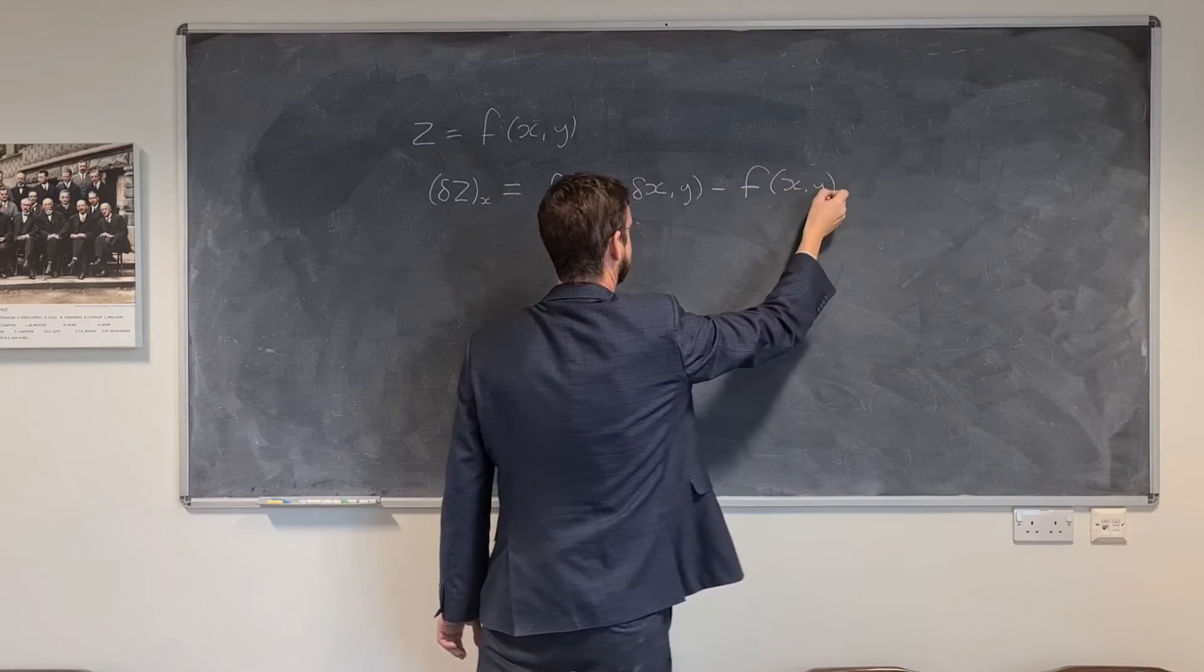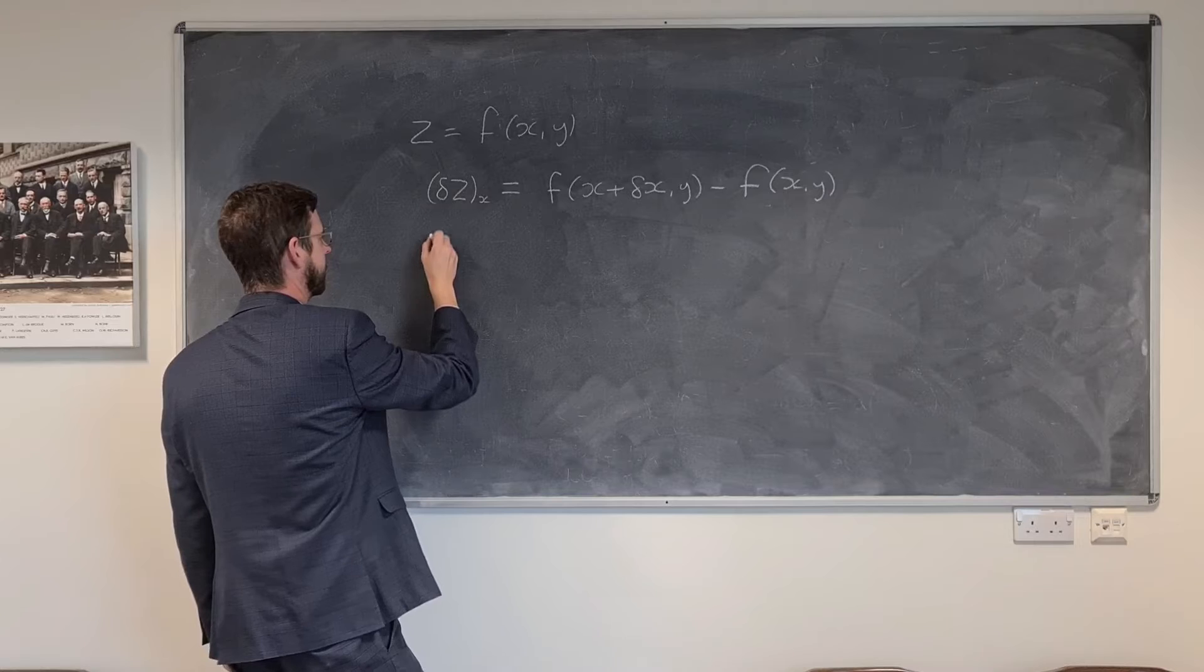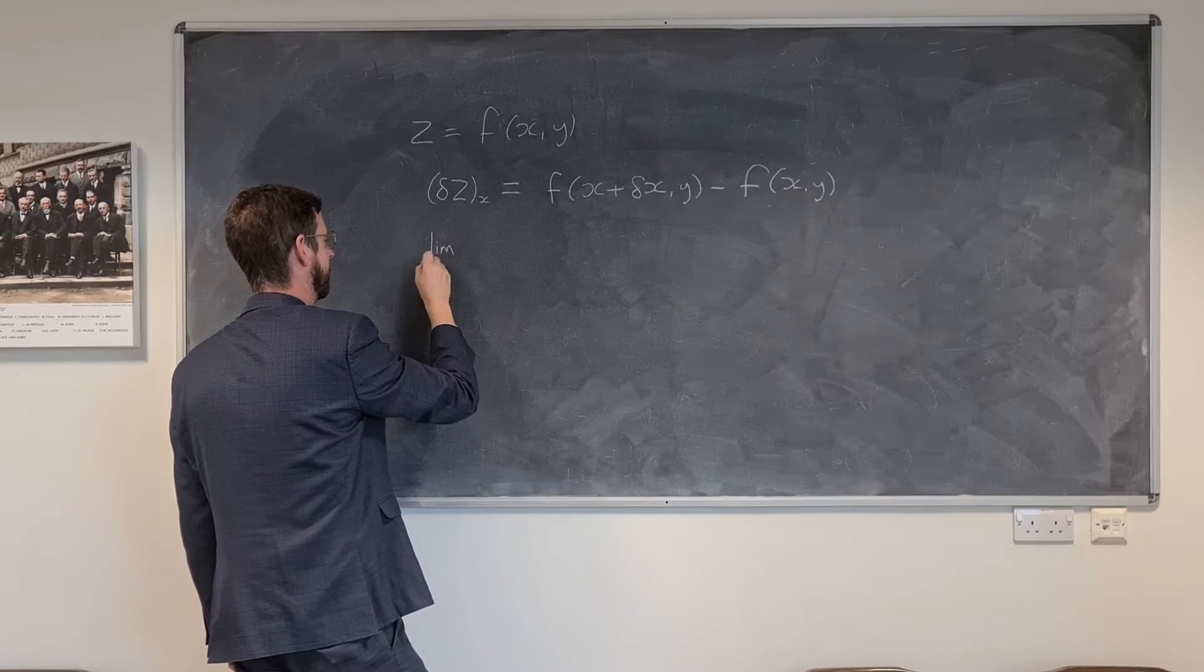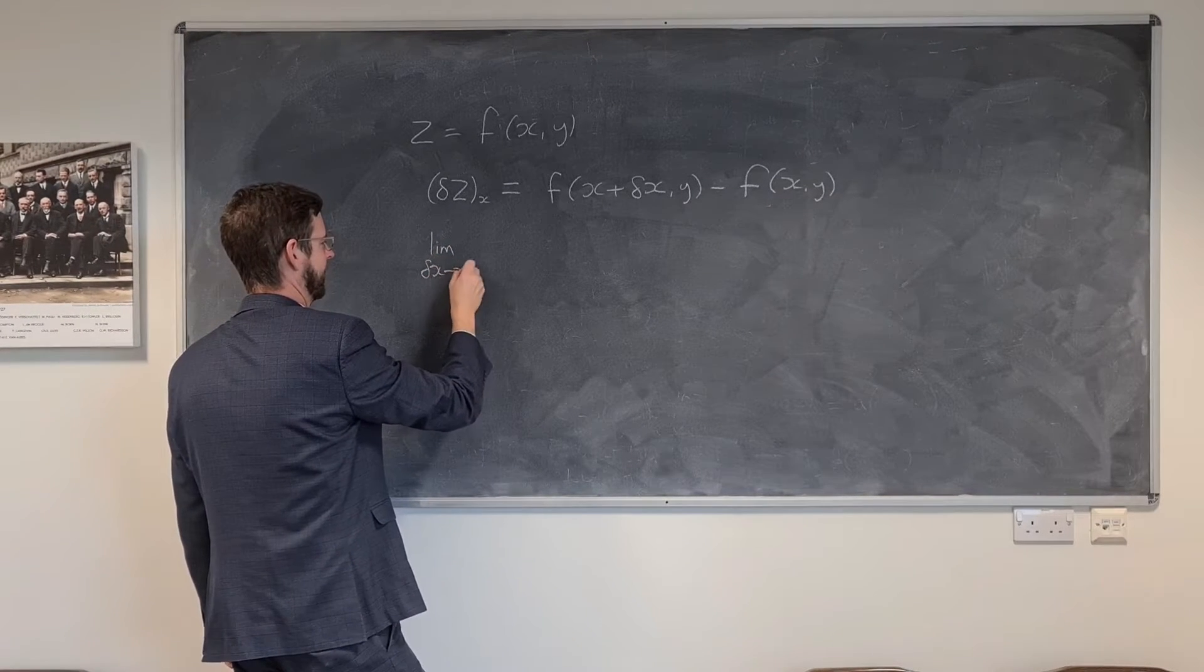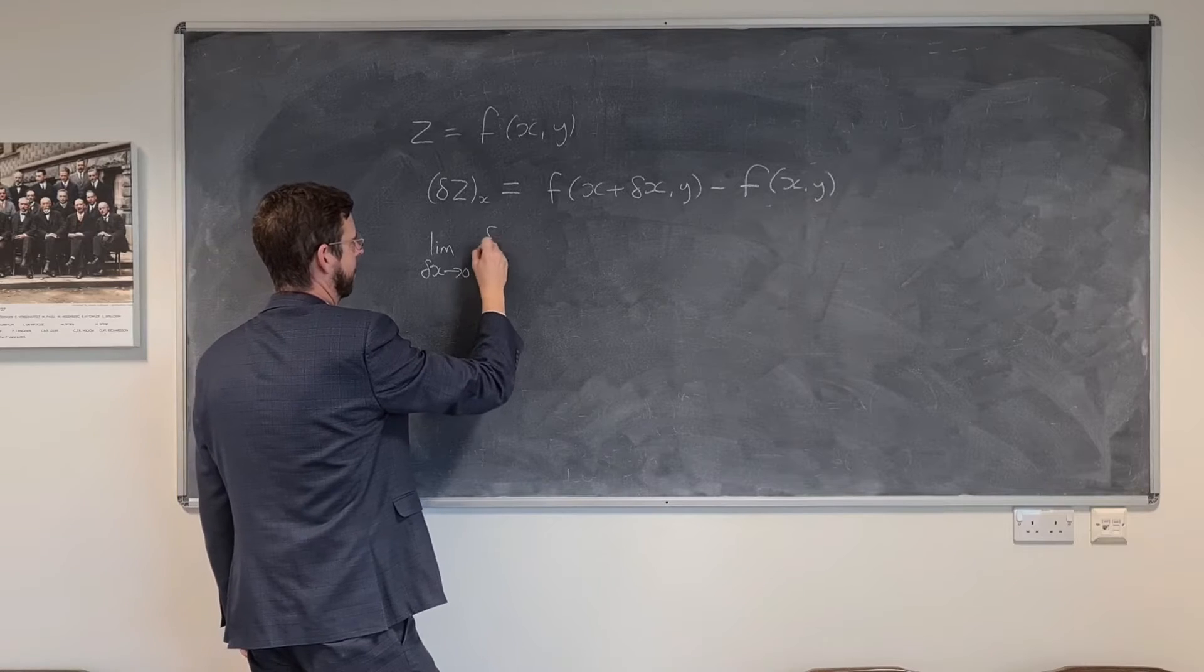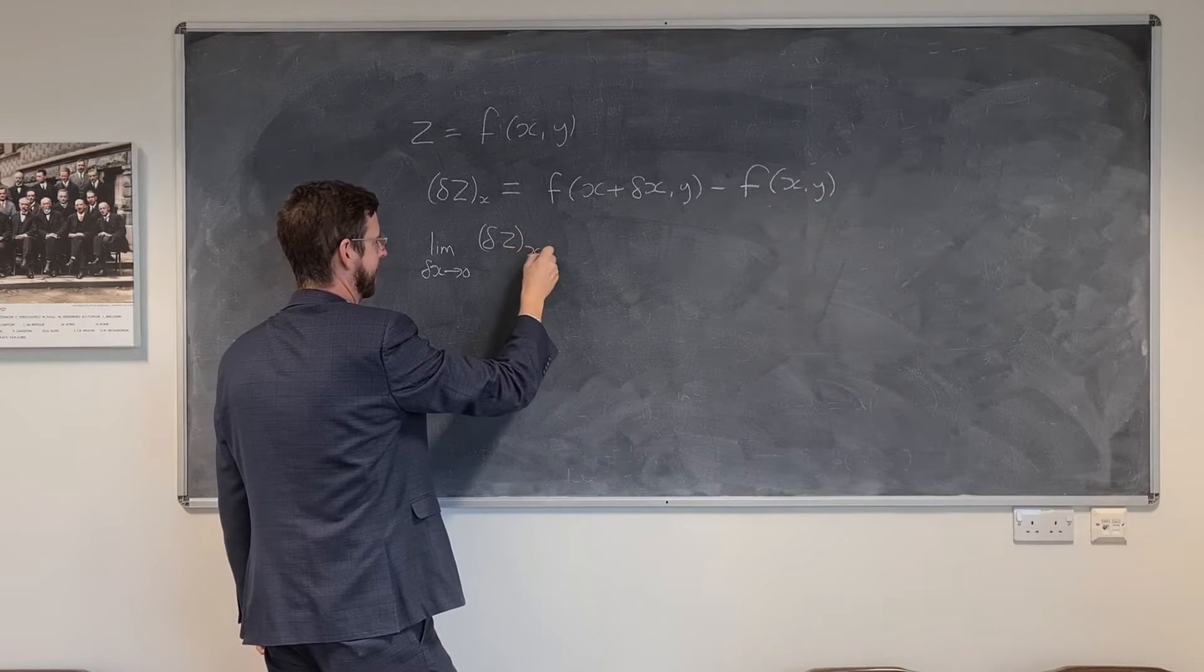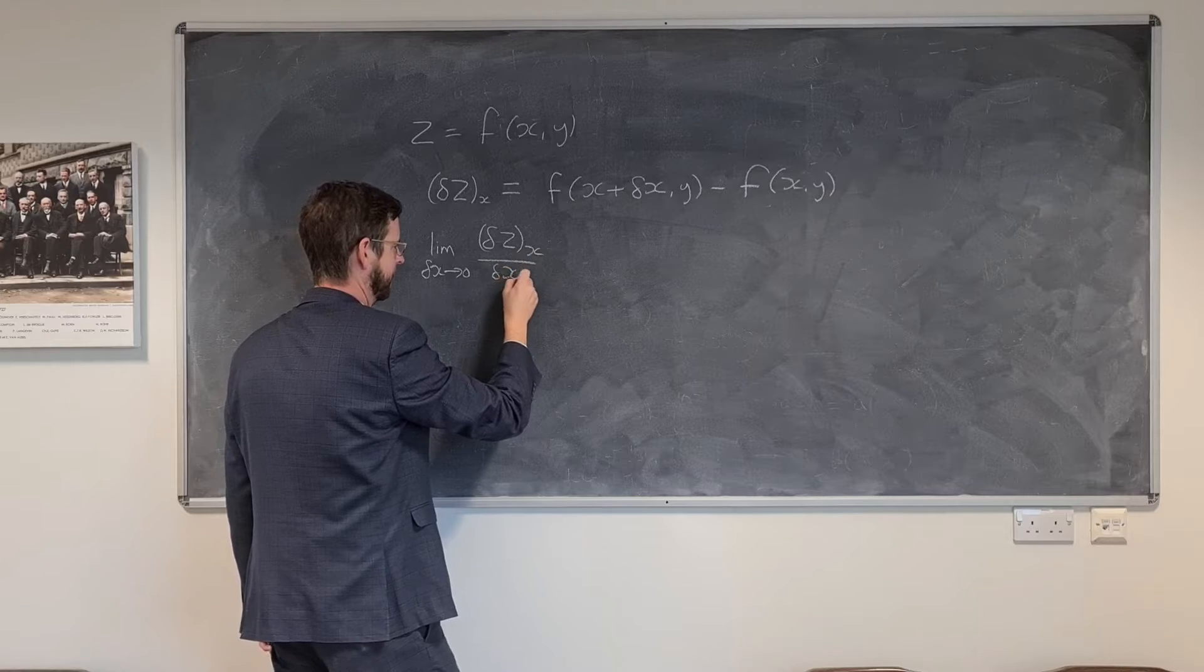So this new point would give us x plus a small increment of x and y minus the original point on this function with respect to the two quantities. Now, of course, we can pursue this further and see what happens as we take this to zero of dz in x by dx.